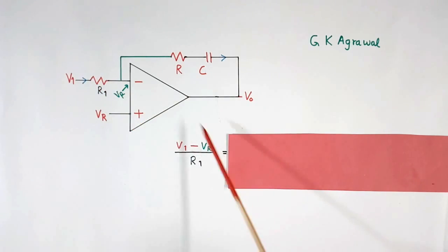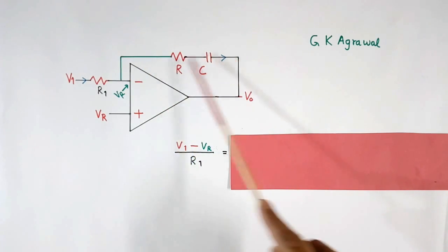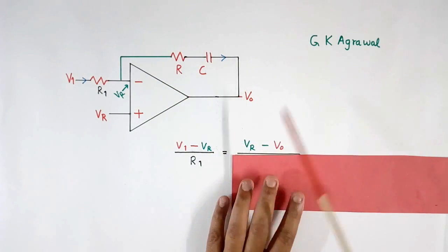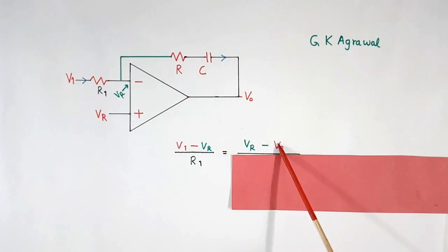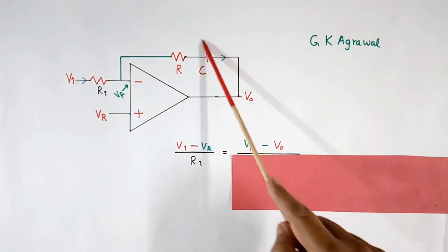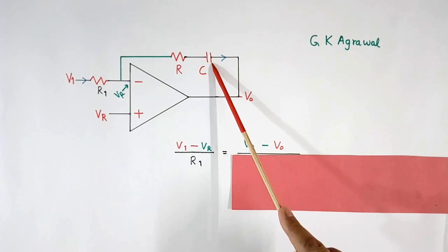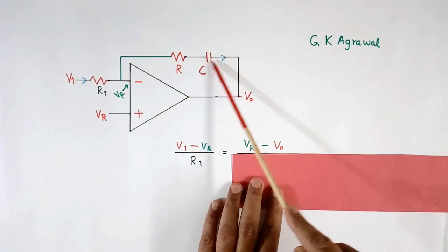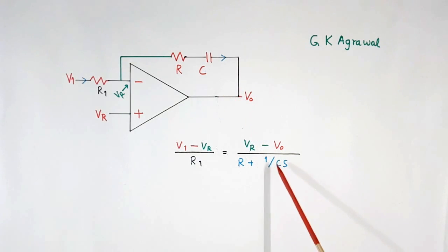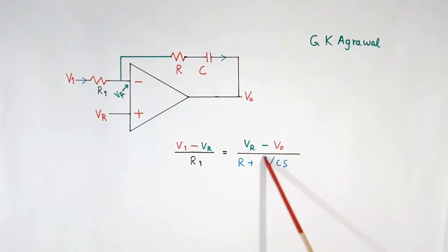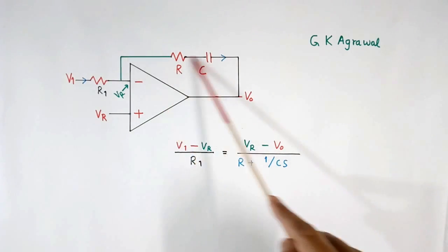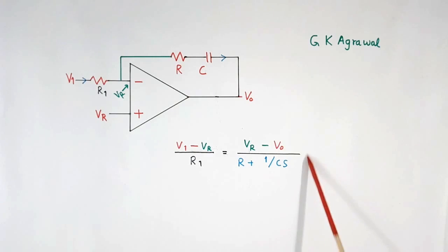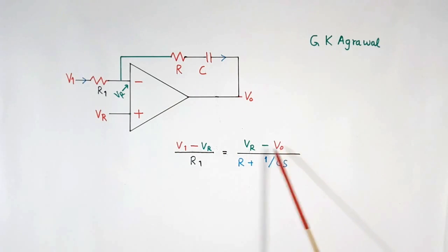This current will be equal to the current through the feedback path. The feedback current equals the voltage across that path — that is Vr minus V0 — divided by the impedance of the feedback path. Because both R and C are present, we call it impedance. The impedance equals R plus 1 divided by Cs, written in the S-domain. So both currents are set equal, and using mathematics we solve this equation to find the correlation between V0 and V1.